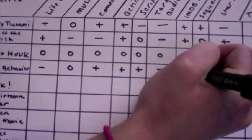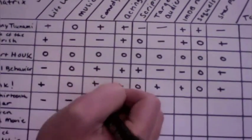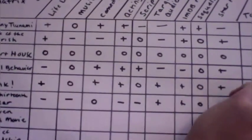Using a series of pluses, minuses, and zeros, we compare each individual concept to the benchmark. A plus sign indicates better performance, a minus sign indicates worse, and a zero indicates equal.